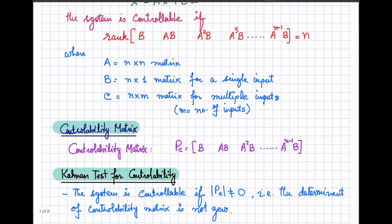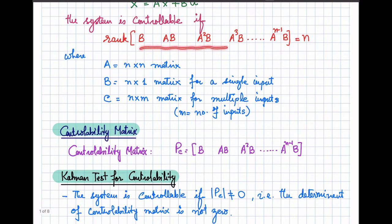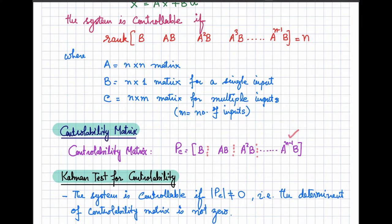This matrix is called the controllability matrix and we represent it as Pc. Its first element is B, the second element is the product of matrix A and B, the third element is the product of A² and B, and so on. The last element is A^(n−1) times B. By looking at the rank of this matrix, you can determine whether the system is controllable or not.